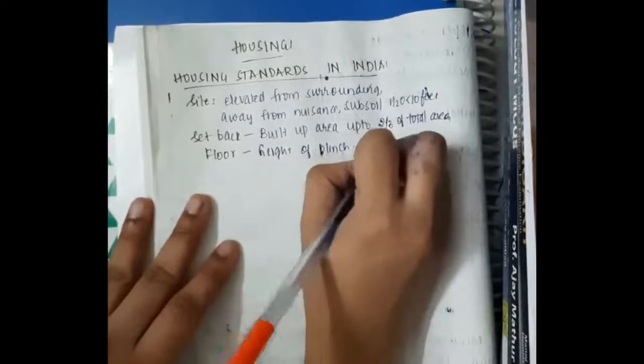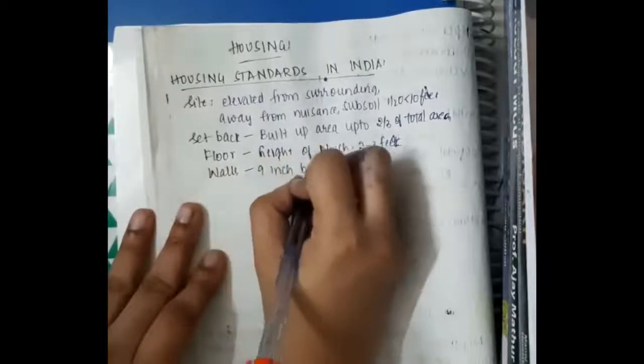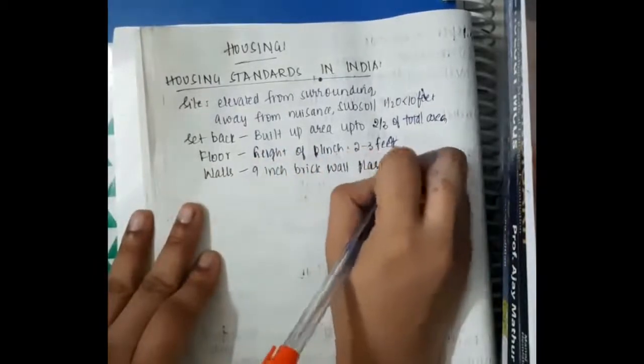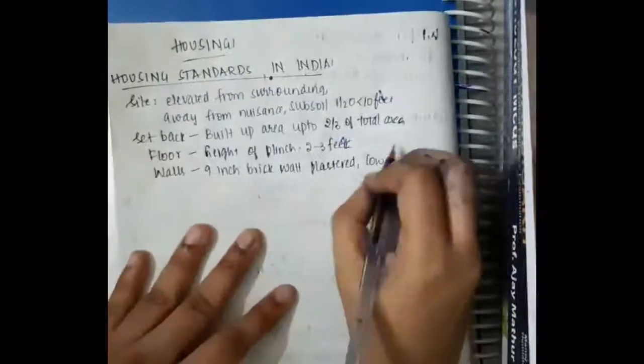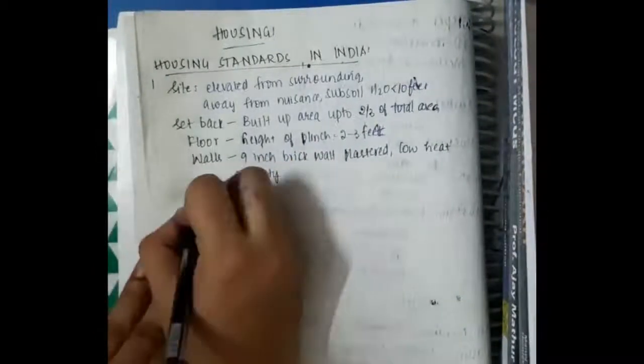Floor is high, height of the floor should be two to three feet. Then walls should be nine inches brick wall plastered with low heat capacity. Nine inches brick wall should be plastered, low heat capacity.